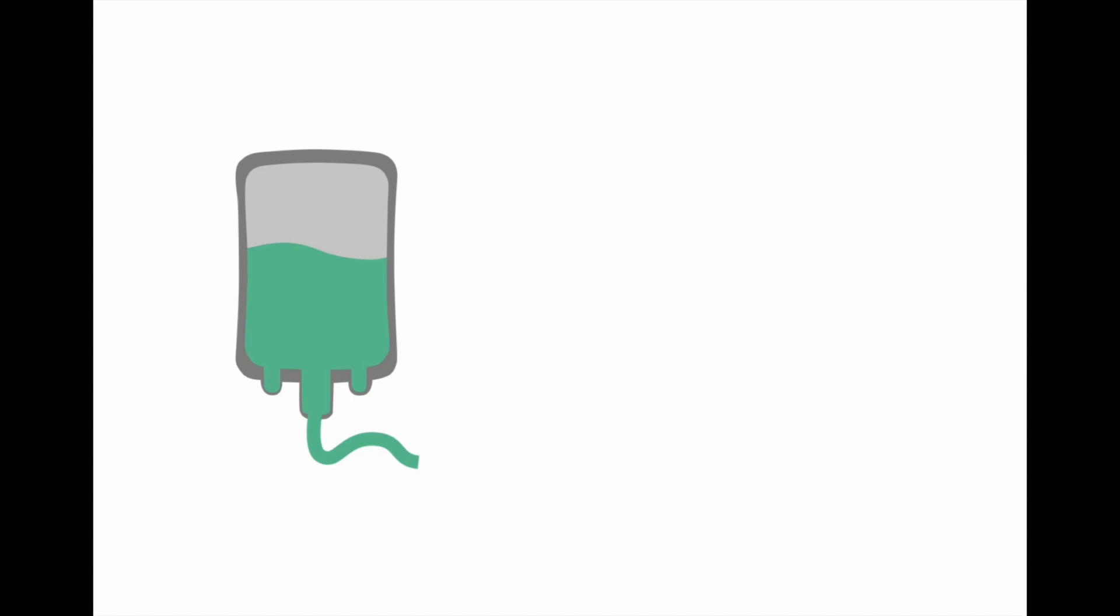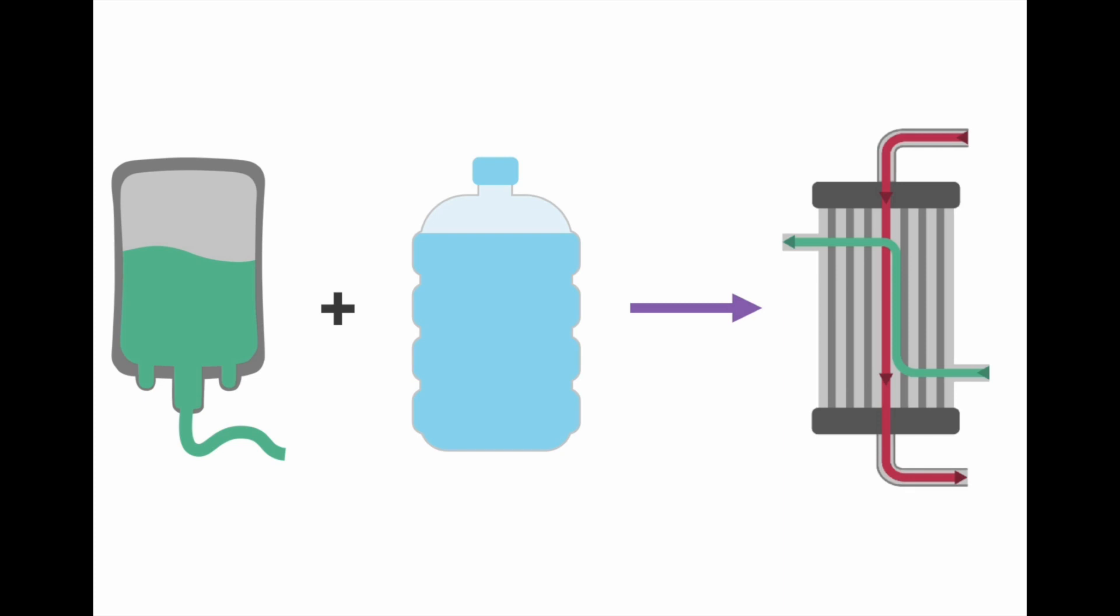This dialysate fluid is a concentrated powder which is mixed with RO water from the RO plant to get a solution that is generally isotonic with our body or slightly hypotonic. The dialysate concentrate or powder is mixed with RO water and flows as a counter current to the blood from the patient, and exchange takes place between blood and the dialysate.